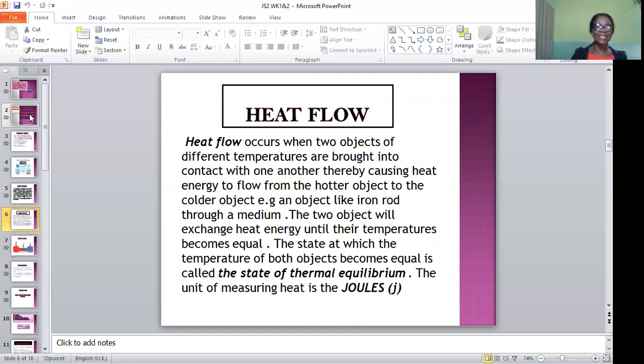The subheading of today's lesson is heat flow. Heat flow occurs when two objects of different temperature are brought together into contact with one another, thereby causing heat energy to flow from the hotter objects to the colder objects. An example is an object like iron rod through a medium. There is a fire burning and you introduce an iron rod into it. Before you know it, you will not be able to hold that iron rod again because heat has been transferred to the iron rod. The state at which the temperature of both objects becomes equal is called the state of thermal equilibrium.